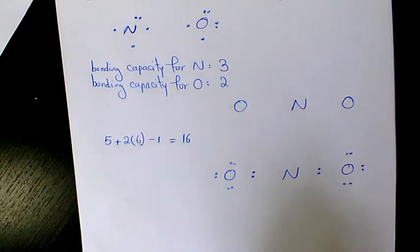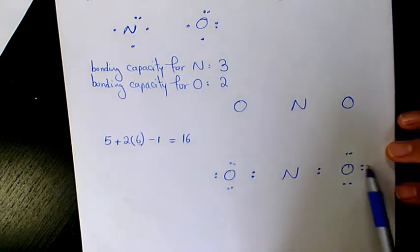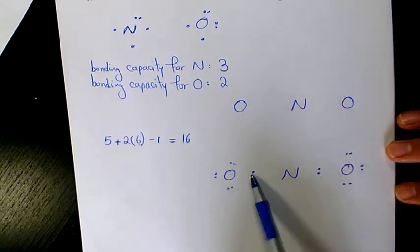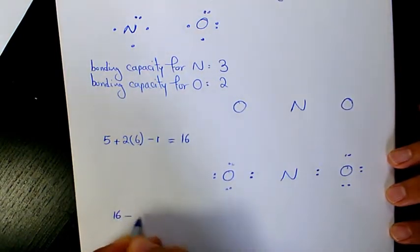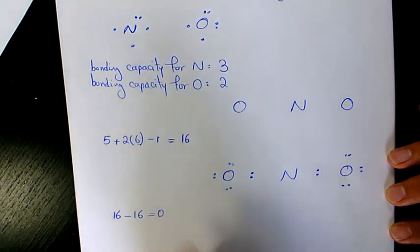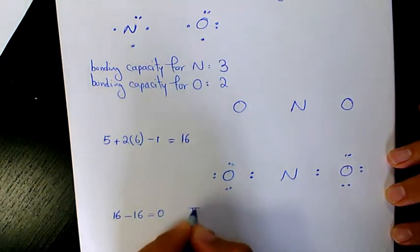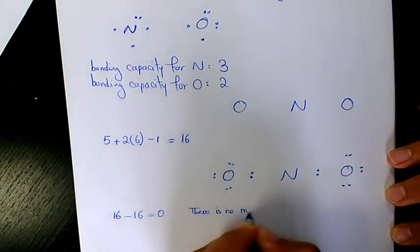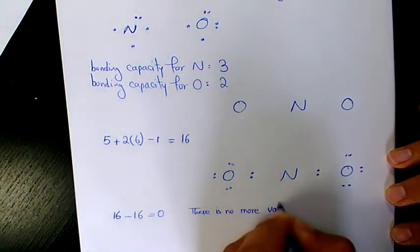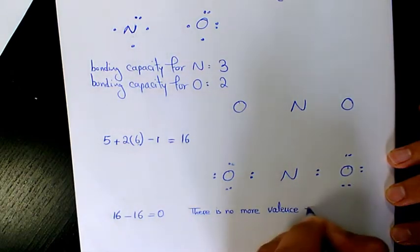So we need to check how many electrons are still available. So we have two, four, six, eight, ten, twelve, fourteen, sixteen. So number of available 16 minus 16 is going to be zero. So there is no more valence electron available.